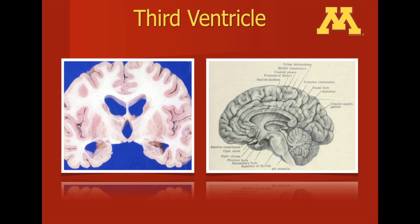Moving on to the third ventricle — the third ventricle is a medial structure, as apparent on the image on the left-hand side of the screen. One can see the lateral ventricles that merge into the third ventricle, which is a midline structure. It is bordered on either side by the hypothalamus, and lateral to that, the internal capsule and the basal ganglia.